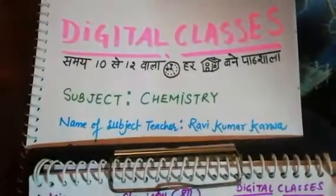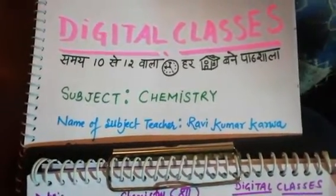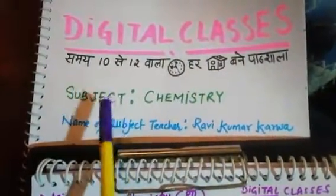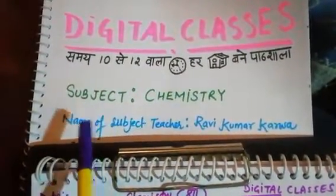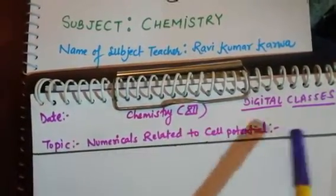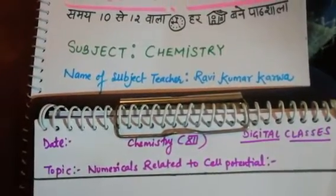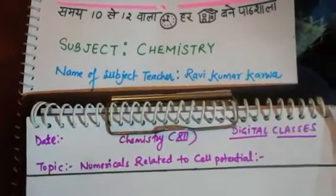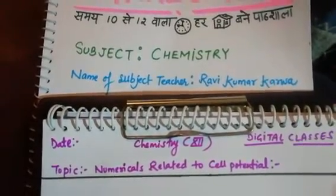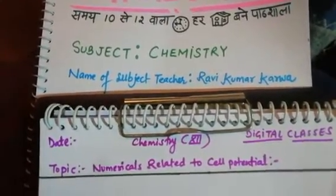Hello, my lovely students. Good morning. Hope you are fine and taking care of yourself. Welcome to digital classes. This is your chemistry class and I am your chemistry teacher. Today we will discuss numericals related to cell potential and the Nernst equation. As in yesterday's video we discussed cell potential and a couple of examples, today one question is coming in your exam related to cell potential or Nernst equation.